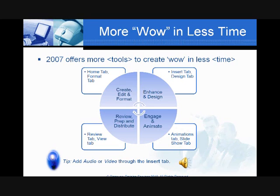That brings us to the last set of options here. As we're creating around the circle of PowerPoint, you have to make sure you prep — you're getting ready to distribute. Don't be afraid to use spell check; you have to make sure that the typos are eliminated. We've got some new tools we'll talk about under review and prep, and your review tab and your view tab will be very powerful options that you can use as you consider the new changes in 2007.